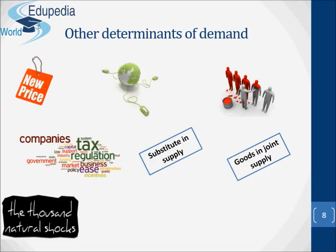Nature, random shocks and other unpredictable events. In this category we would include the weather and diseases affecting farm output, wars affecting the supply of imported raw materials, the breakdown of machinery, industrial disputes, earthquakes, floods and fire, etc. The aims of producers: a profit-maximizing firm will supply a different quantity from a firm that has a different aim, such as maximizing sales. For most of the time, we shall assume that firms are profit maximizers.